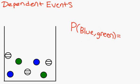Now, let's try a compound-dependent event. What's the probability of picking a blue than a green without replacement? The probability of picking a blue is two sevenths, and the probability of getting a green is two sixths. Then you multiply the numbers and get four out of forty-two.